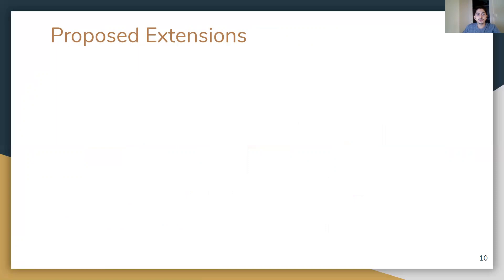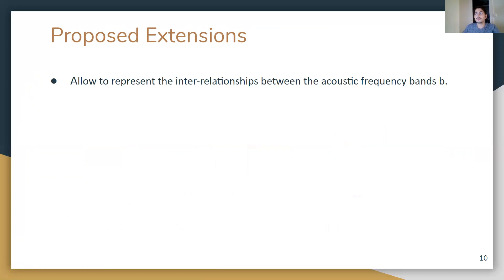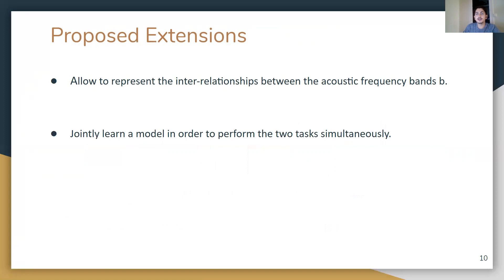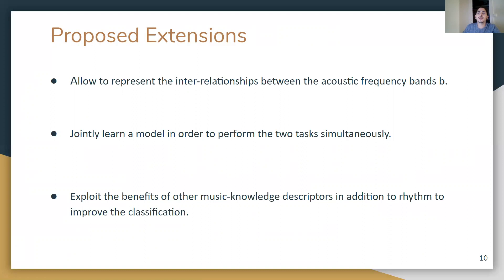We propose three extensions to improve Deep Prism following music knowledge intuitions. First, we want to allow the model to represent the interrelationships between the acoustic frequency bands. Second, we want to learn the model to perform the two tasks simultaneously. Finally, we want to exploit the benefits of other music knowledge descriptors in addition to rhythm in order to improve classification.